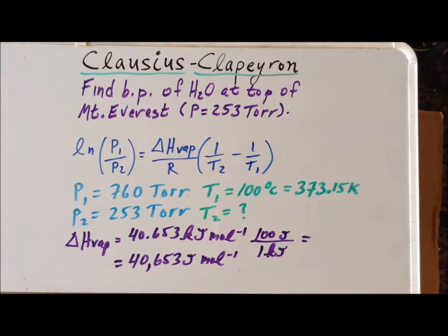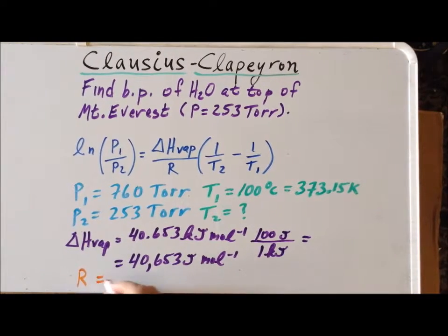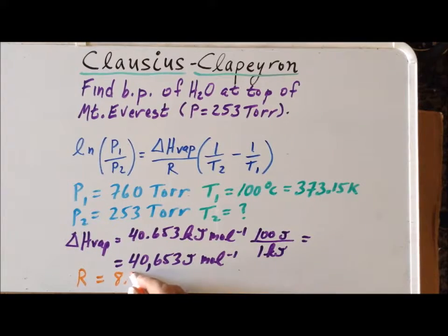Last but not least, we need to use the gas constant R, and we need to use it in the form of 8.3144 joules per kelvin per mole. Now, with these quantities in tow, we will substitute into the Clausius-Clapeyron equation and solve for T₂.